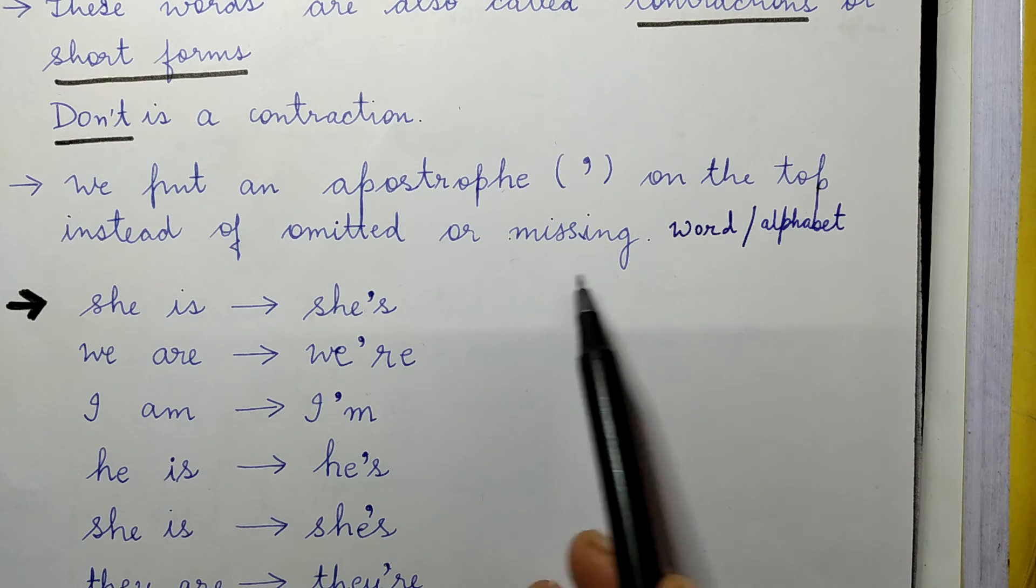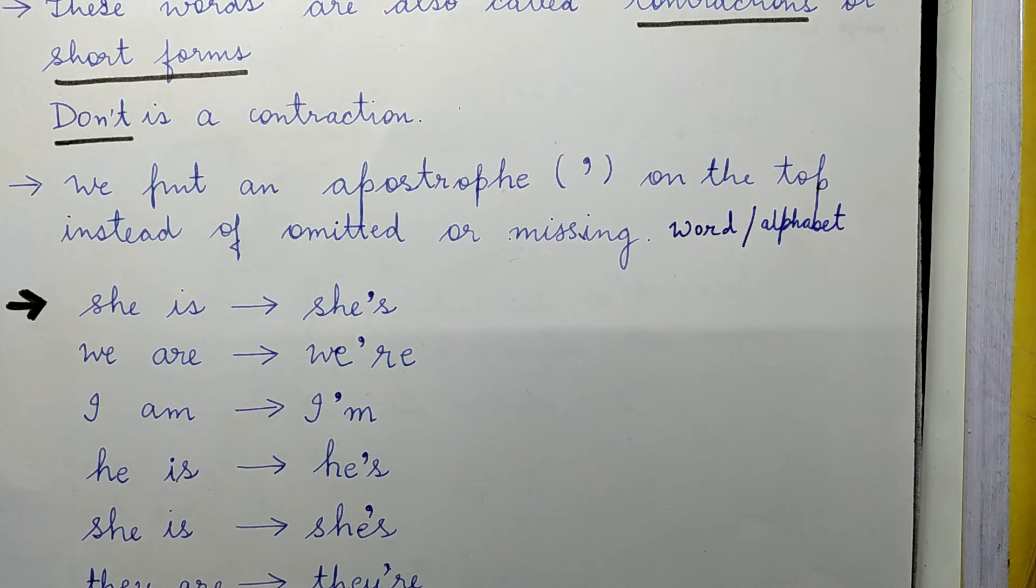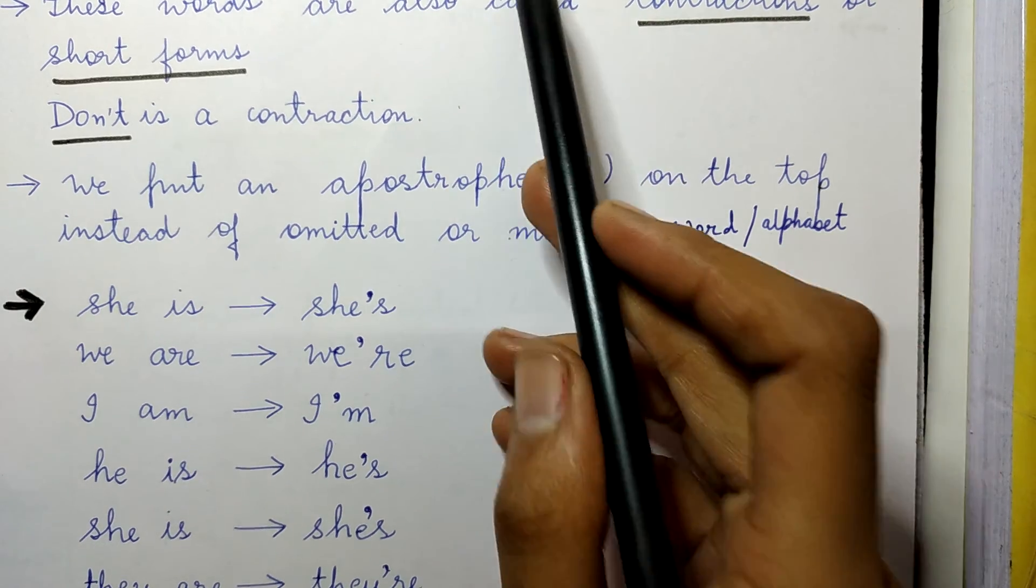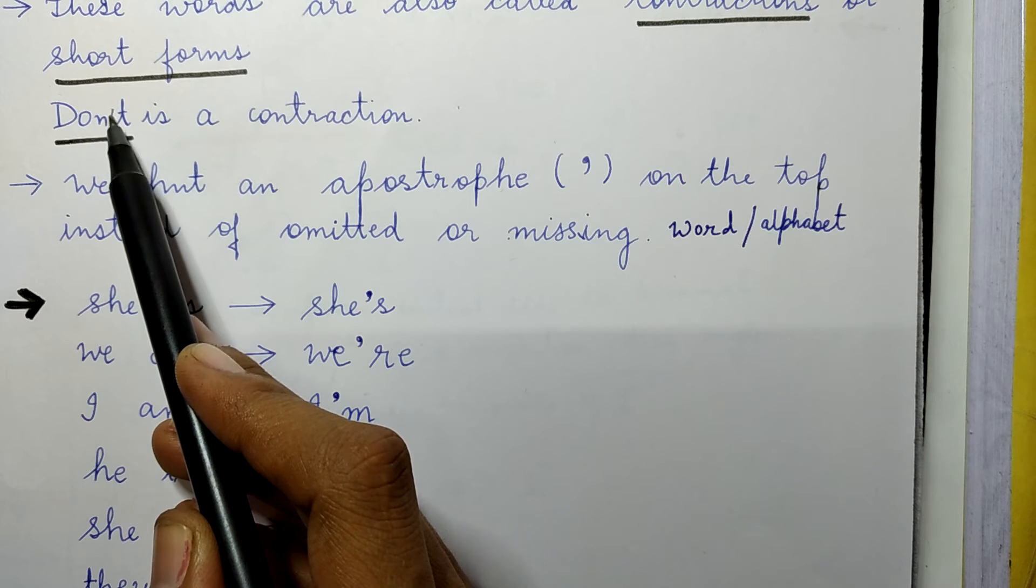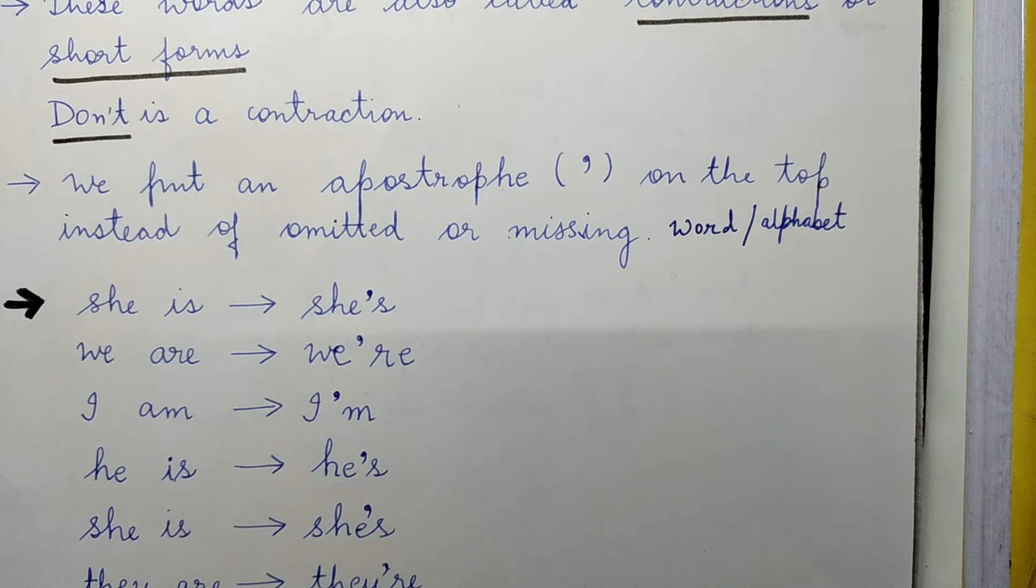For example, here I have missed O in do not, so I've written don't. I've skipped that O and instead of that I put an apostrophe on the top. This is how these short forms are represented.